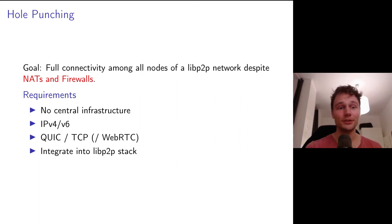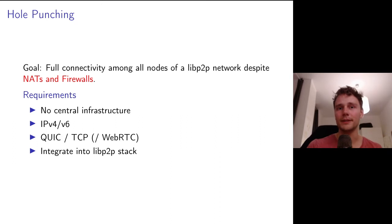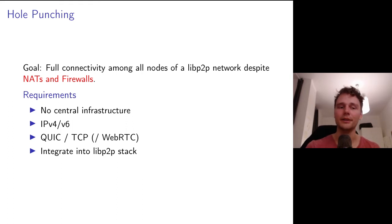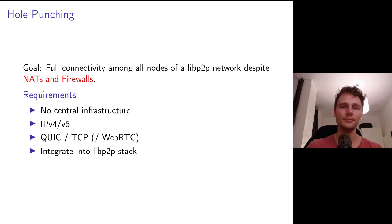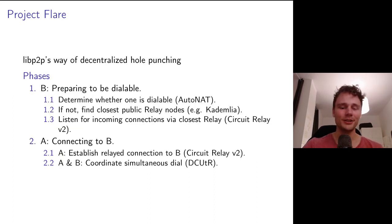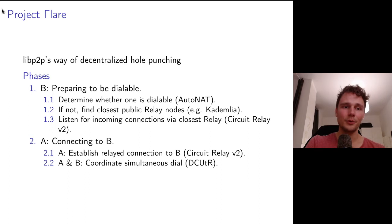We're not the first ones to try out hole punching — this is somewhat standardized, and those familiar probably know the ICE standard, TURN, and STUN. In addition to the requirements that ICE has, we have a few others: being a peer-to-peer library we don't want any centralized infrastructure; we want to run on IPv4 and IPv6; we want to support UDP with QUIC or TCP; and hopefully in the future WebRTC. This should also nicely integrate into the entire libp2p stack. This is called Project Flare — the project name for how libp2p does decentralized hole punching — and what we came up with is very similar to ICE with TURN and STUN.